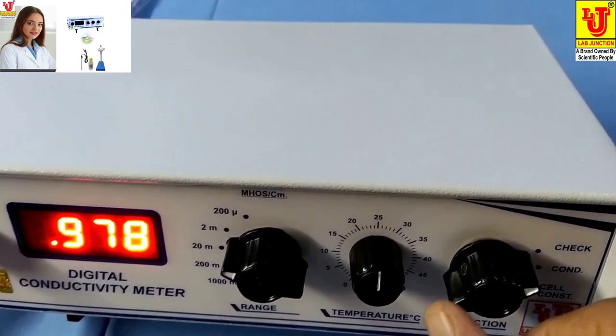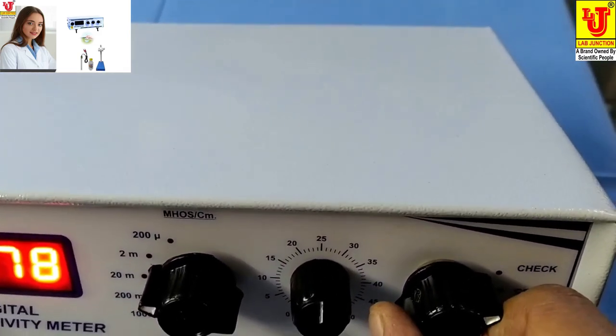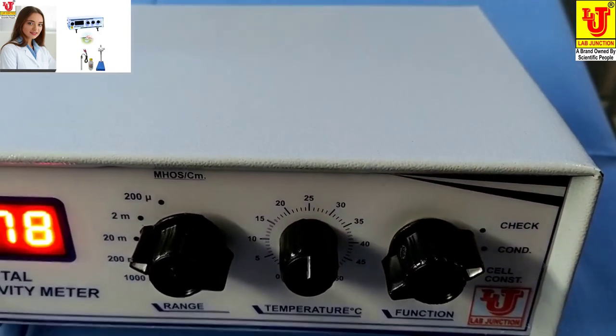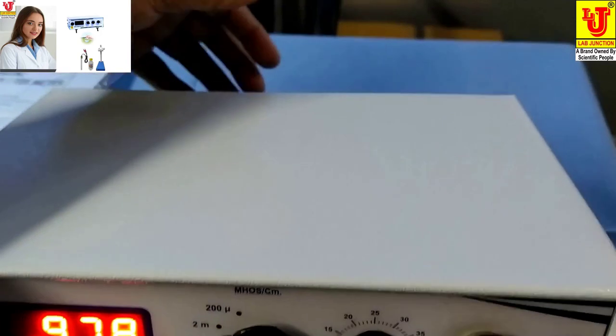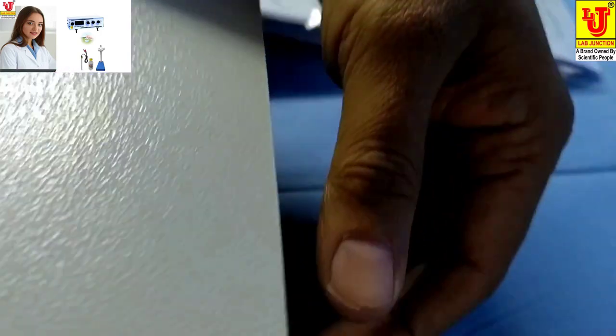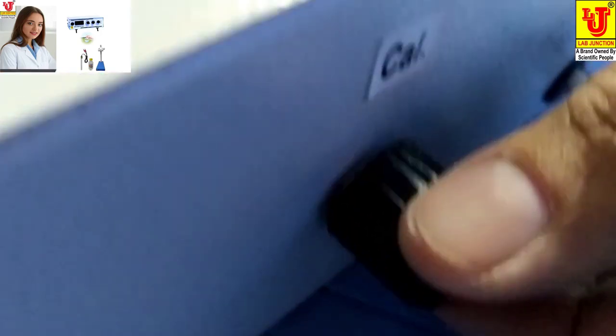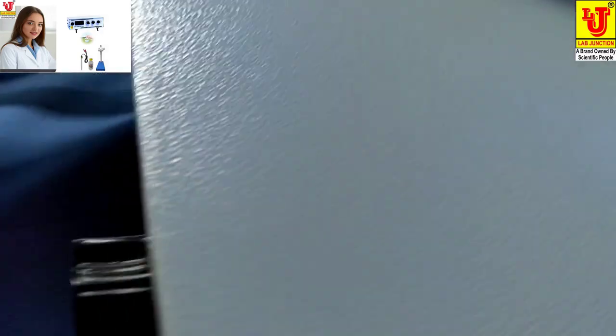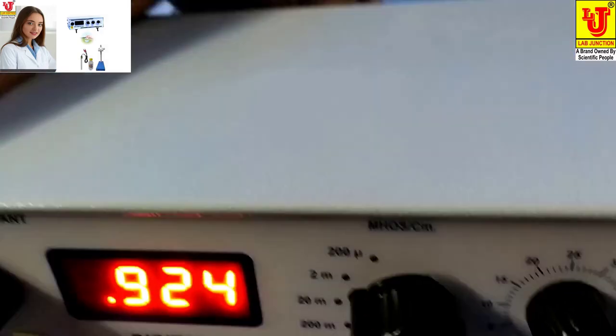First you have to do function control on check position like this. On the back side, one Cal knob is there. You have to set 1.000, all zero.